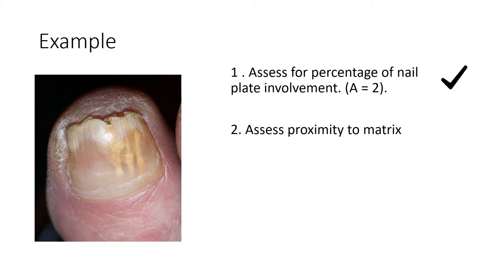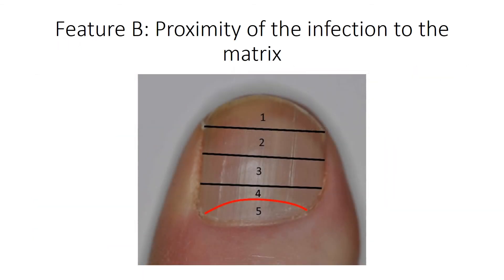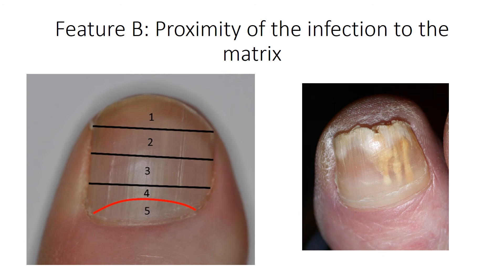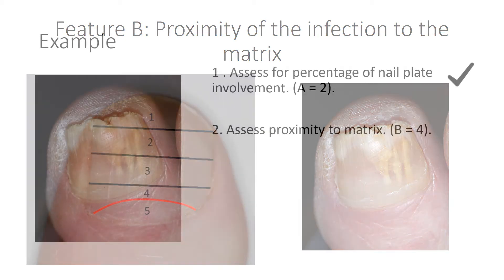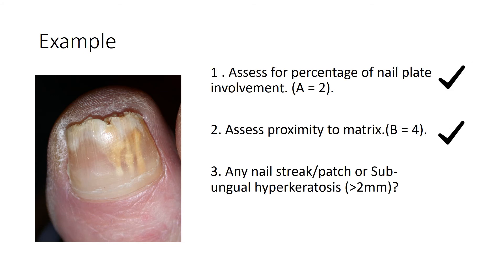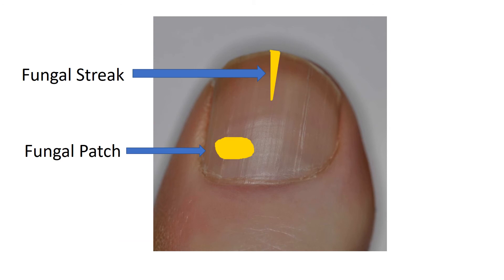From there we move to Feature B: proximity to the matrix. Remembering the nail is split into quarters with the lunula scoring five — one, two, three, four, five. Looking at our patient's nail, the infection appears very close to the lunula but probably not quite reaching the nail matrix itself, so I would score Feature B as equal to four. We now have A equals two and B equals four. Next we look for any nail streak, patch, or subungual hyperkeratosis. A fungal streak is a spike of nail running proximally from the free edge toward the matrix, and a fungal patch is an isolated area of infection not continuous with the free nail edge.